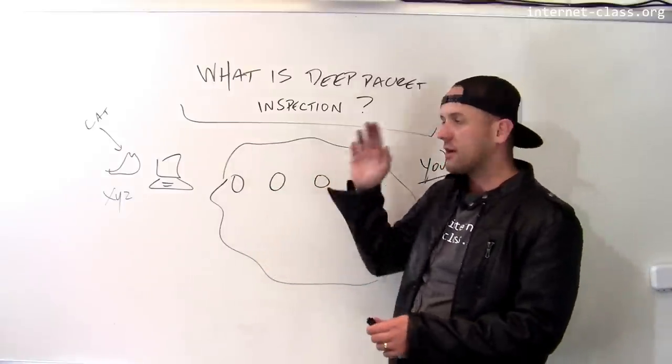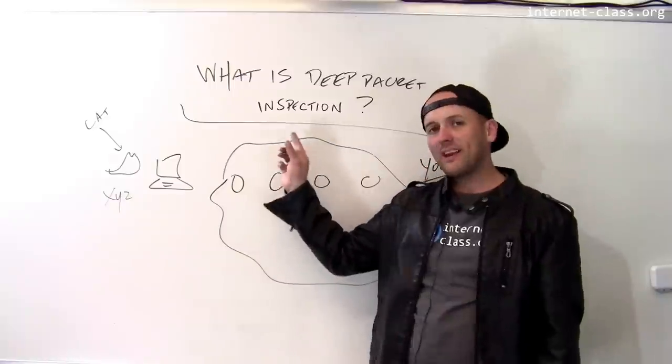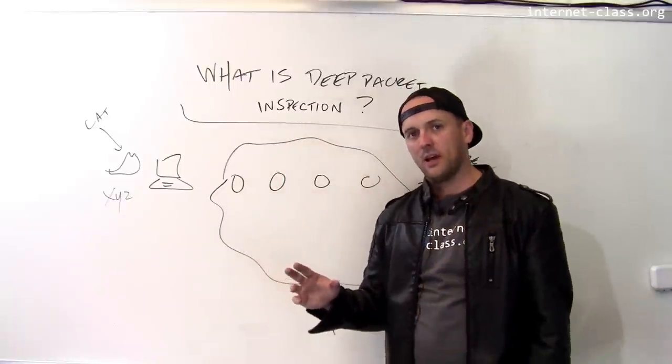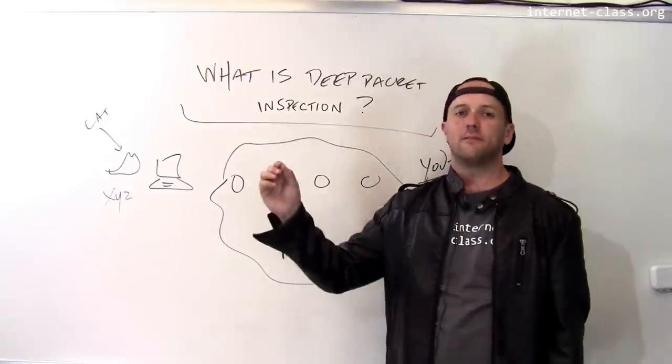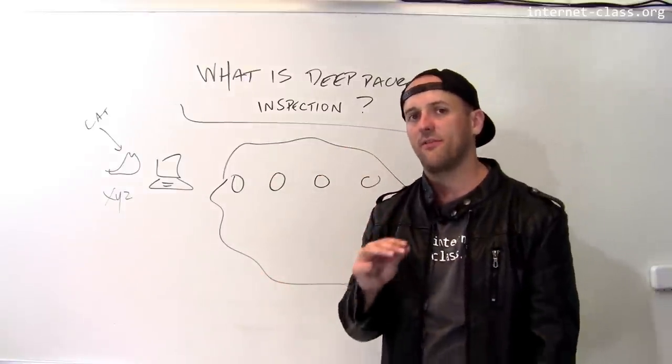And deep packet inspection, the good thing about it, if you think there's a good thing, is that this is quite expensive. And so from a performance perspective, it slows down routers a lot to start examining the contents of the message. Because if all they have to look at is the destination IP address, that's very fast.